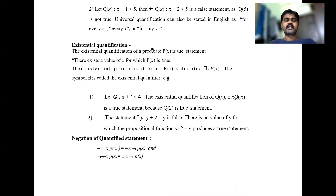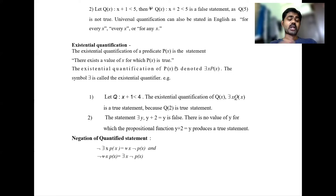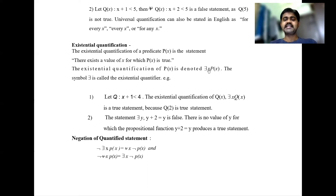Next is existential quantification. We have two types of quantifiers: universal and existential. The existential quantification of a predicate p(x) is the statement 'there exists a value for x for which p(x) is true' — not for all, but for some value. The symbol is the inverted E, called the existential quantifier, and it is written as '∃x, p(x)'.